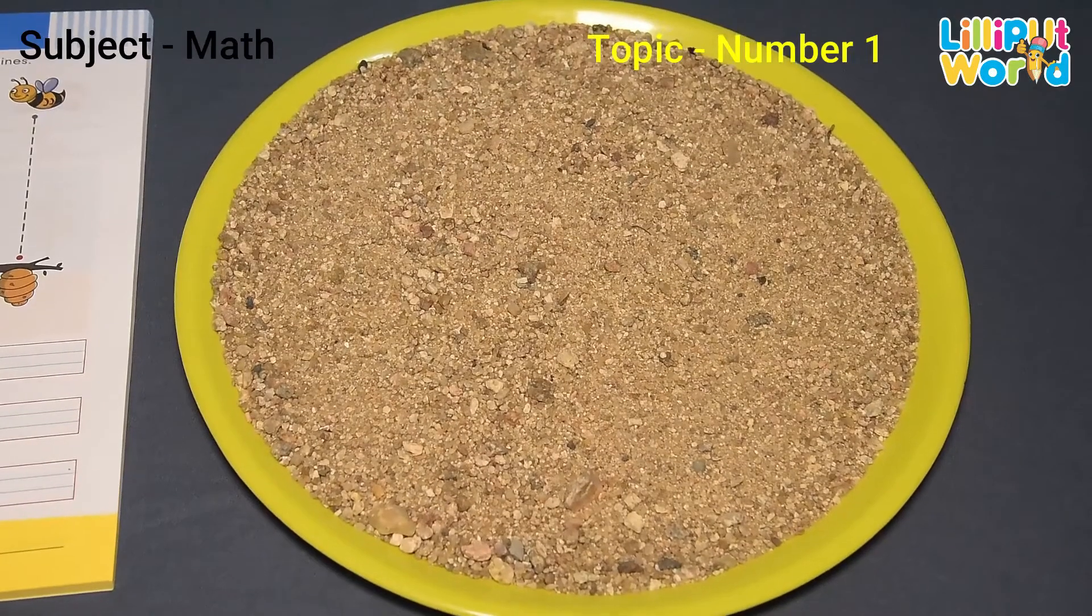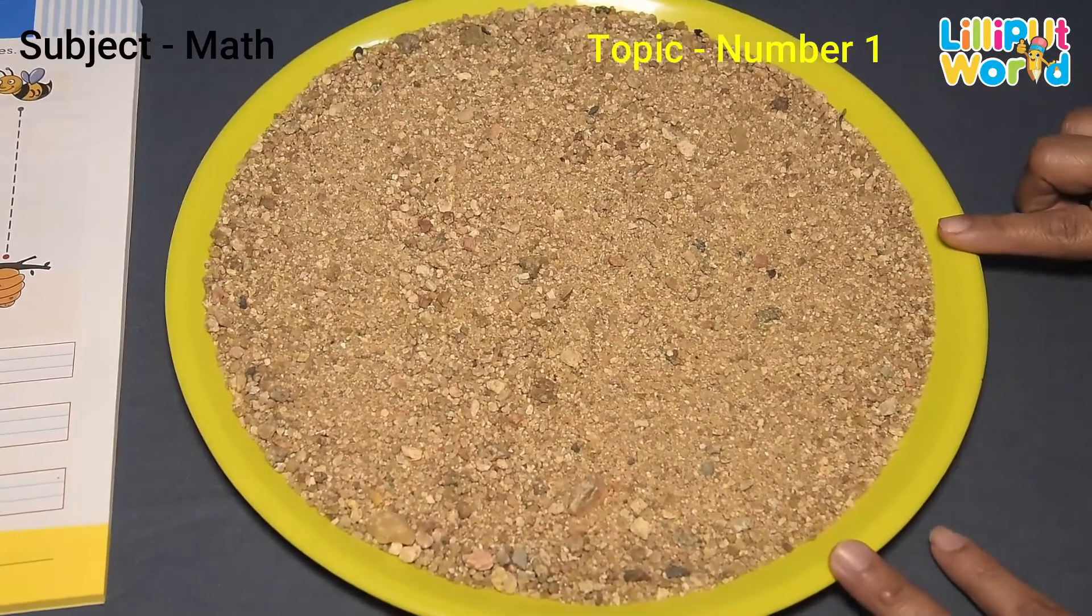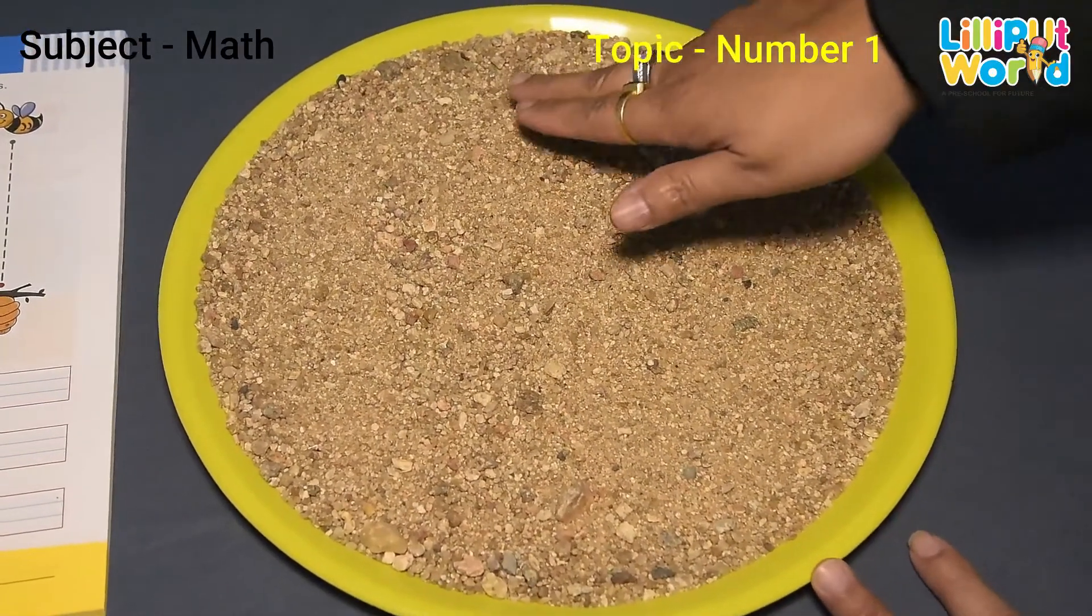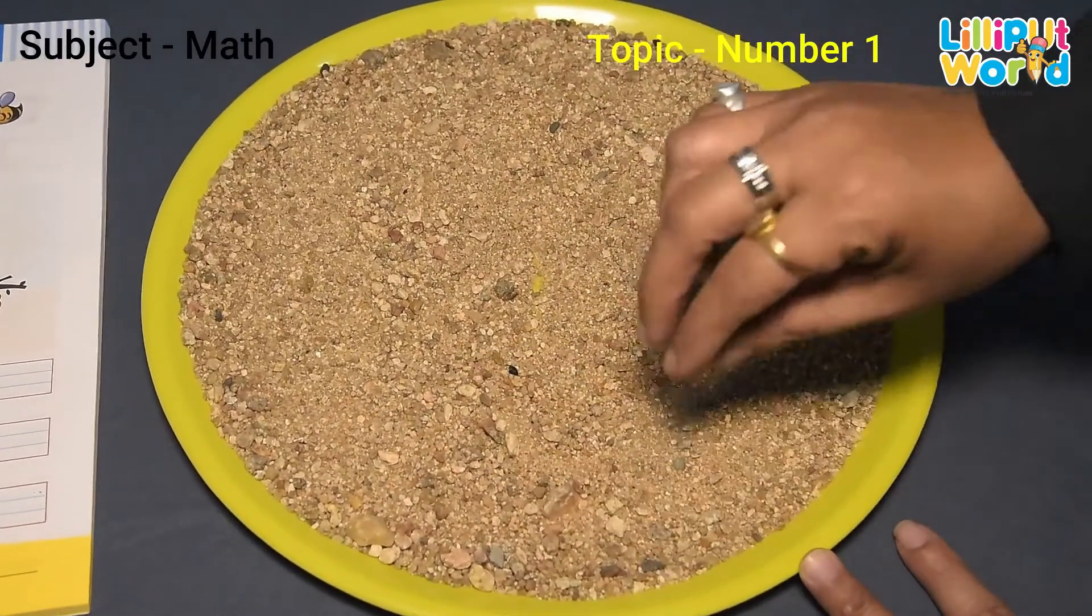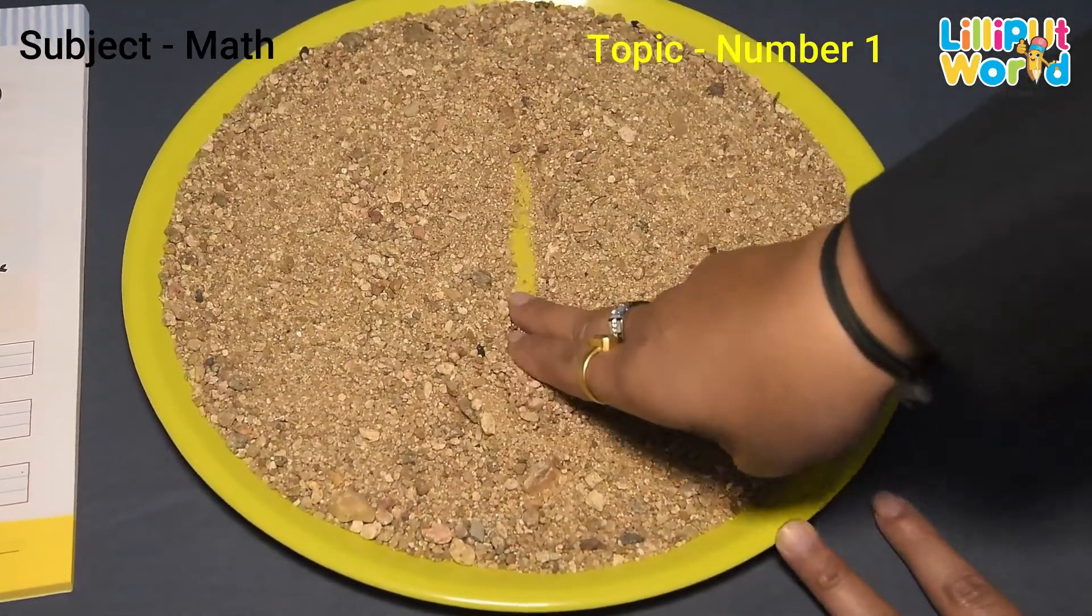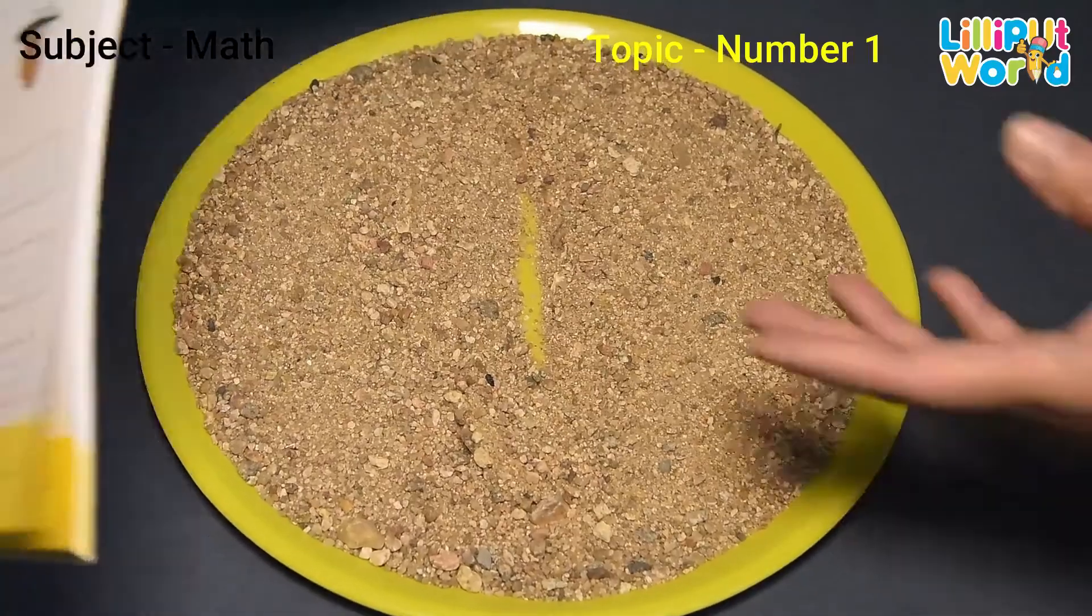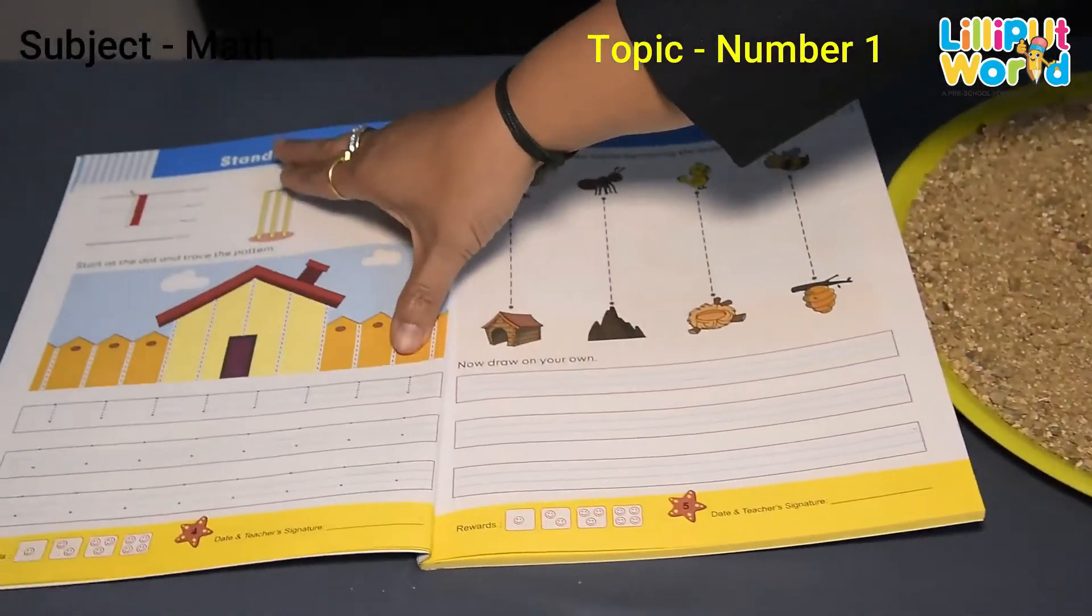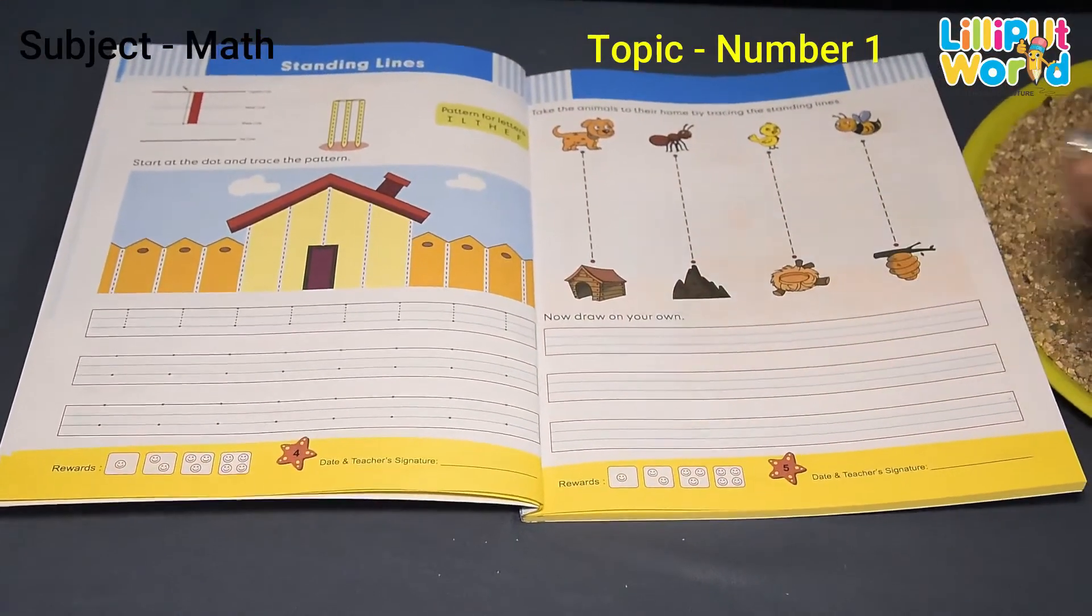Bye bye. Okay parents. I want you take like this plate. I take the sand, but you don't have the sand. You can take the salt. Even you can take the suji also. And make your children to do up to down standing line. Up to down standing line. Like this. Up to down. And make sure you take two fingers. And up to down standing line. So like this. You can take this book, the alphabet books. And you can make them trace up to down standing line. Page 4 and 5. Okay. Thank you.